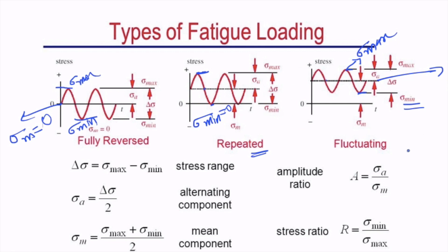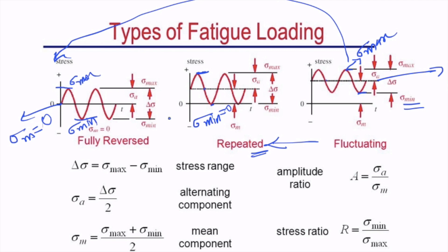An important observation: the fluctuating stress cycle is the general case, and the other two cycles are special cases of it. When you make sigma minimum equal to zero in a fluctuating stress cycle, it becomes a repeated stress cycle. When you make sigma mean equal to zero, the fluctuating stress cycle becomes a fully reversed cycle. So fluctuating stress is the parent case, and the other two are simply derivatives of it.